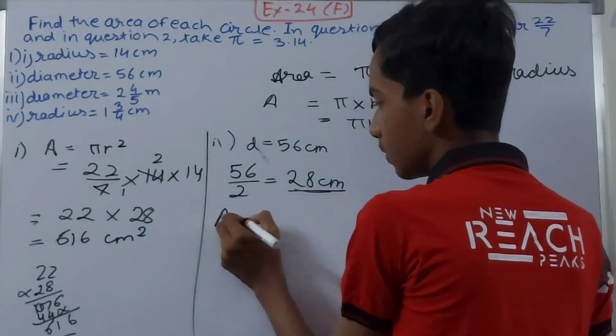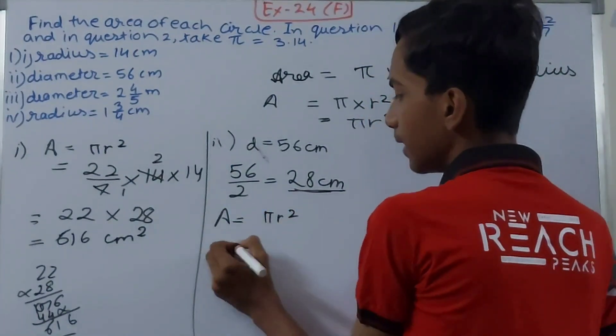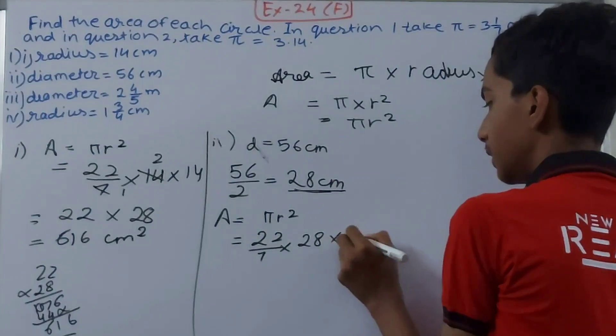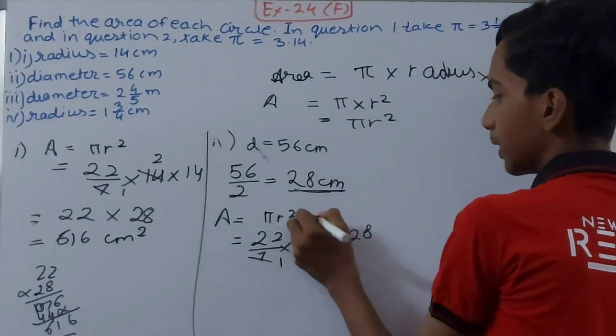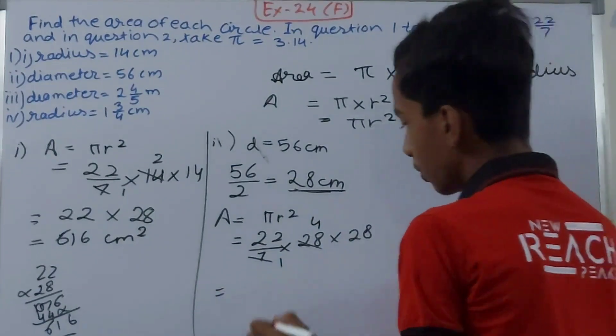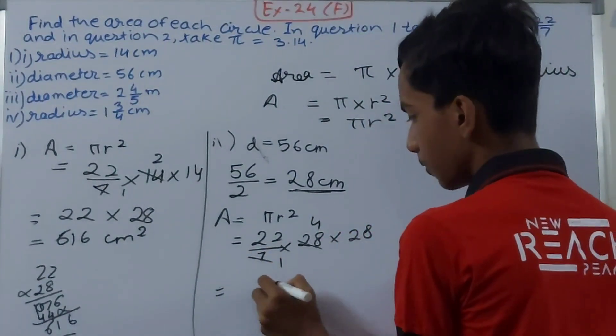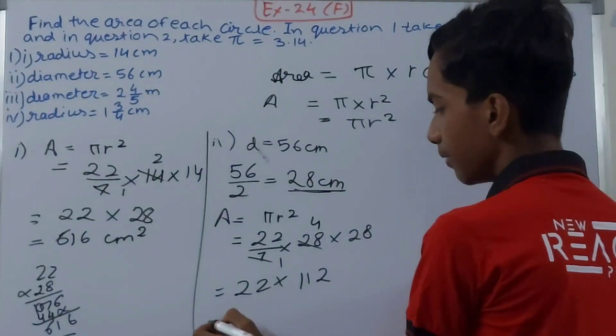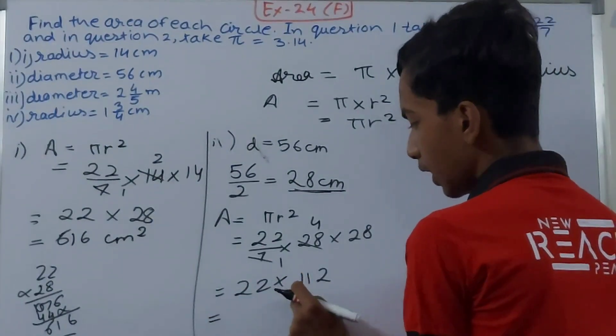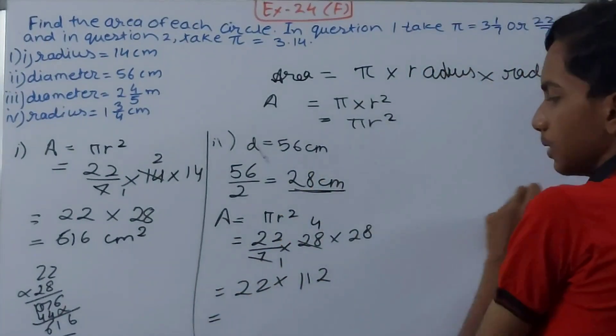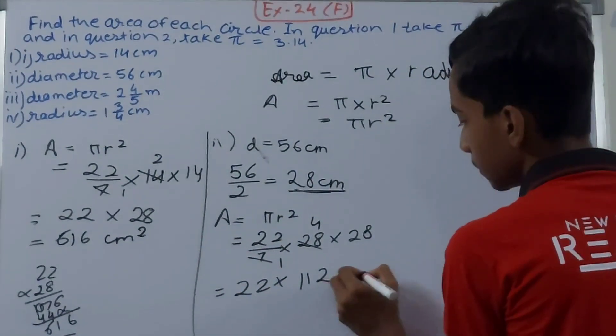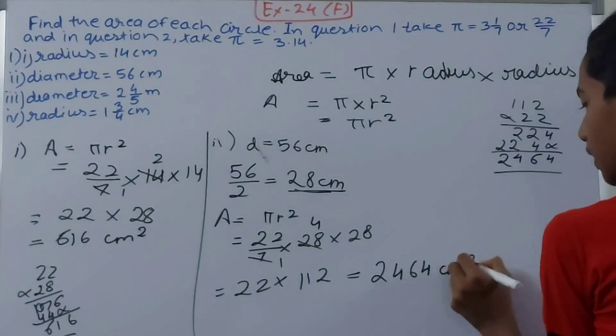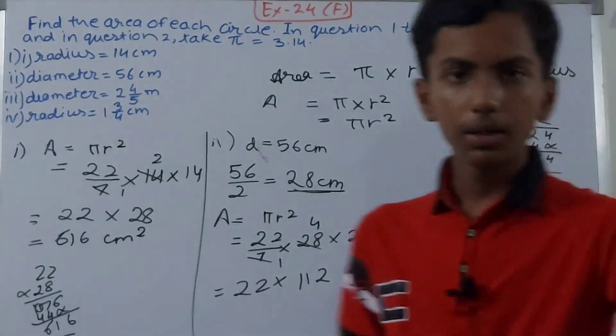Now again, area equals to πr². So π = 22/7 into r² = 28 into 28. Cancel this. So 8 into 4 is 32, 22 into 32 is 224 and then 224. So 112 into 20 becomes 2,464 cm². This becomes the answer.